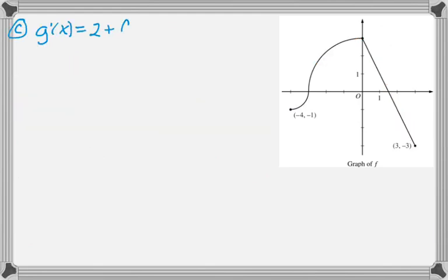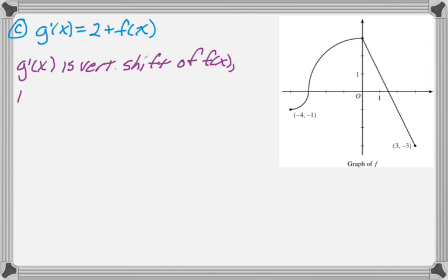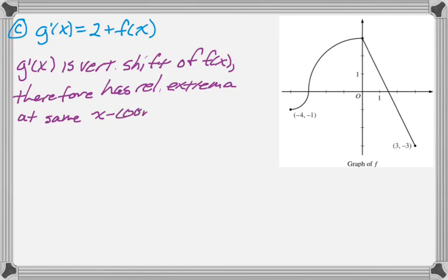So for the next part, I want to find where there are points of inflection. So g prime is 2 plus f of x. And I know that g prime is really just a vertical shift of f of x. And since that's the case, g prime will have a relative extremum of whatever type, wherever f of x does. So at the same x-coordinates. Obviously, the y-coordinates would just be 2 more.